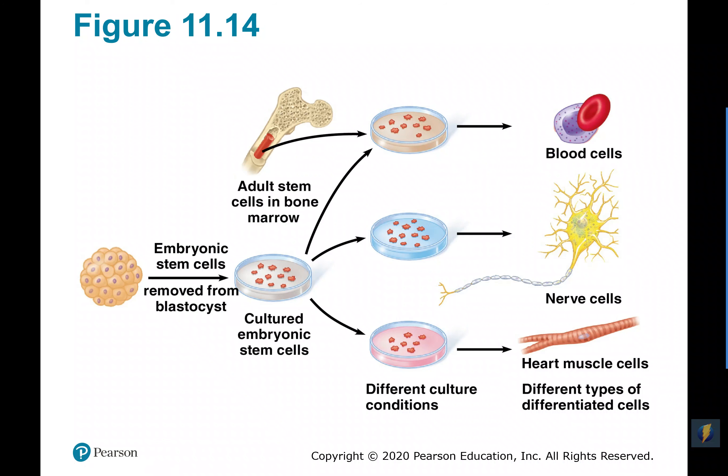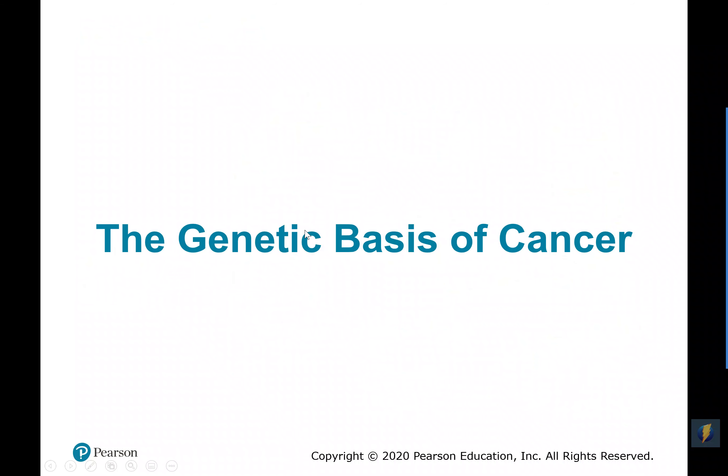Some organs in the human body heal really well — skin heals well, bone heals well — but nerves and heart muscle do not. There is some potential here by using embryonic stem cells to grow and replace damaged cells in tissues that cannot repair themselves naturally.